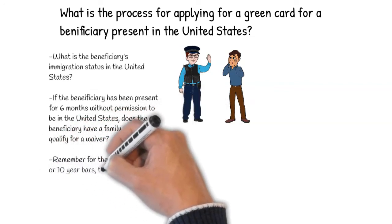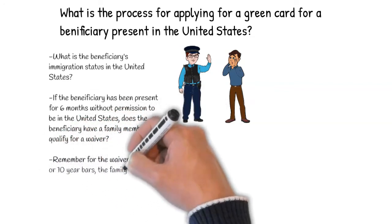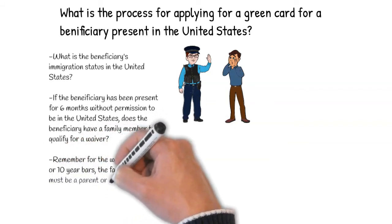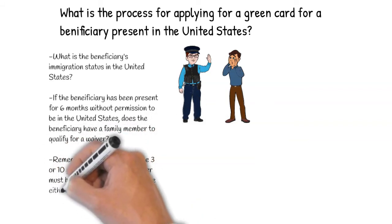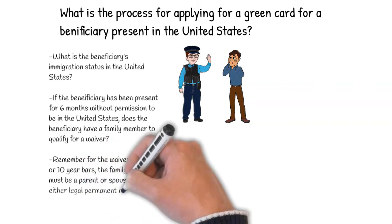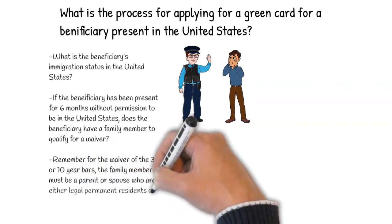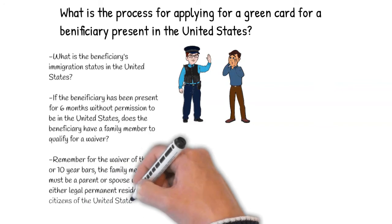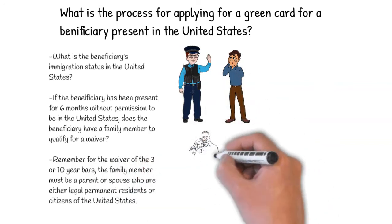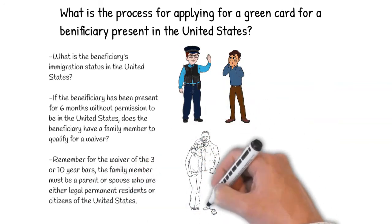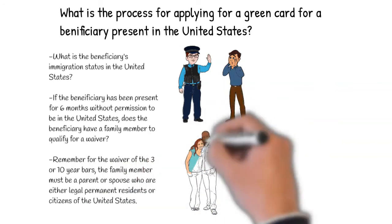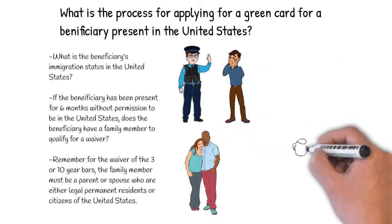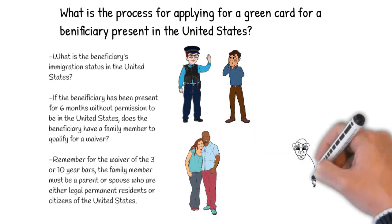In these cases, it is necessary to determine whether the beneficiary qualifies for a waiver to the bar. This waiver depends on whether the beneficiary has a qualifying family member — a spouse or parent — who is either a legal permanent resident or a citizen of the United States, in order to demonstrate the extreme hardship that the family member will likely endure if the beneficiary is not approved for the immigrant visa.